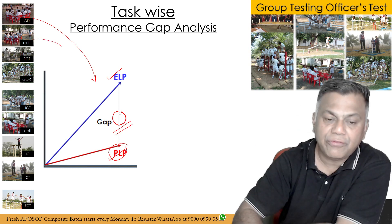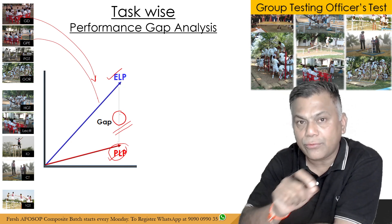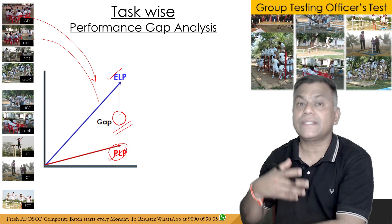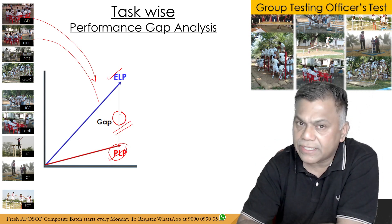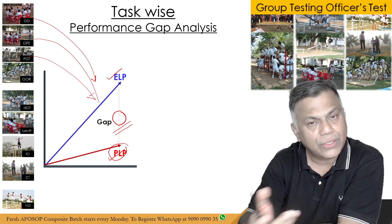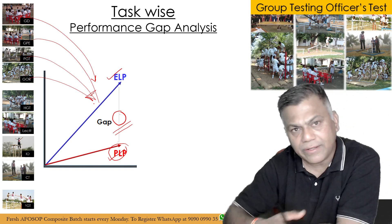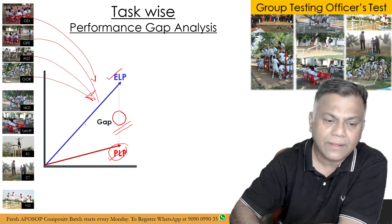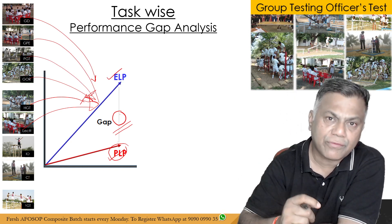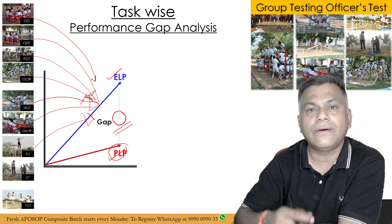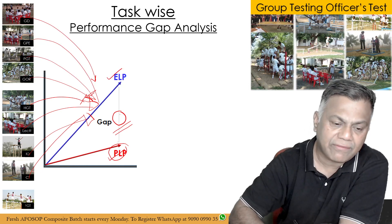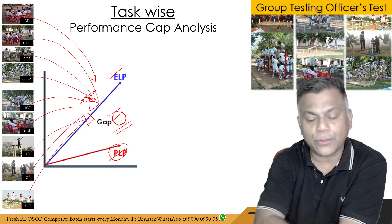Similarly in Group Planning (GP), if you don't know how to grasp the model or narrative, prioritize solutions, manage resources, plan time, communicate, and take part in discussion, you will not perform. In PGT it is not about physical strength but structure analysis — if you don't know how to analyze the structure you will not perform. Group Obstacle Race is physical, so if you're not physically fit you become a liability. Lecturette requires public speaking, content, and confidence. Command Task requires structure analysis where you are the boss and must come up with solutions.